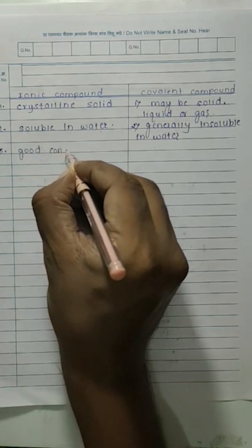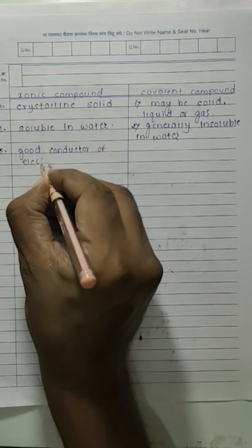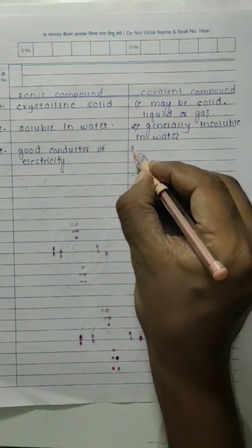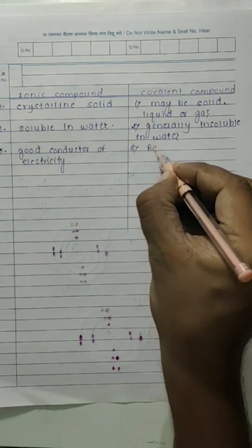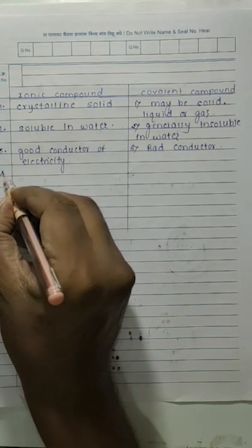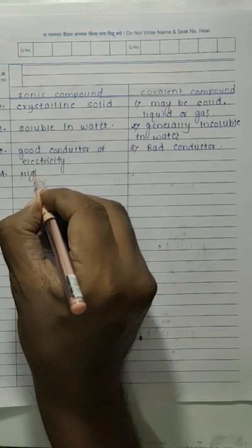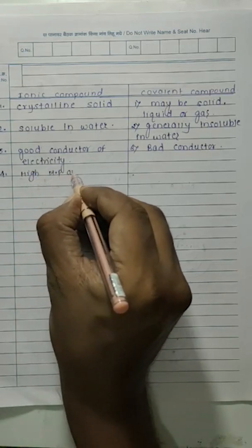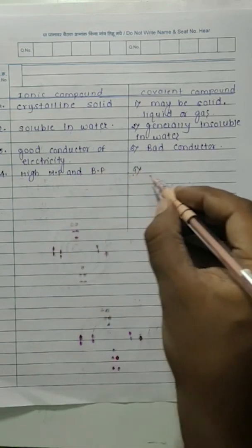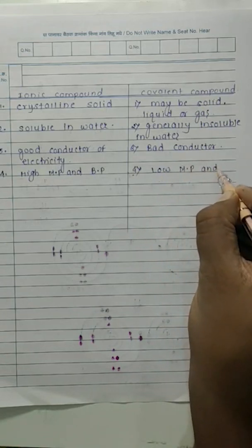Third point: ionic compounds are good conductors of electricity because they form ions. Covalent compounds are bad conductors of electricity because they don't form ions. Fourth point: ionic compounds have high melting point and boiling point, whereas covalent compounds have low melting point and boiling point.